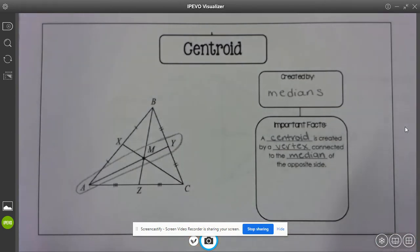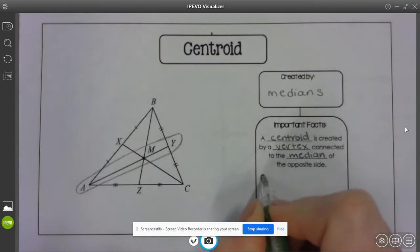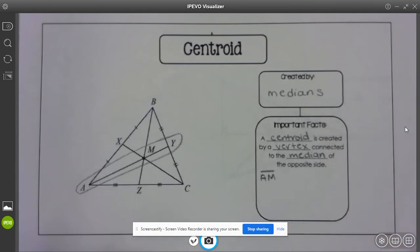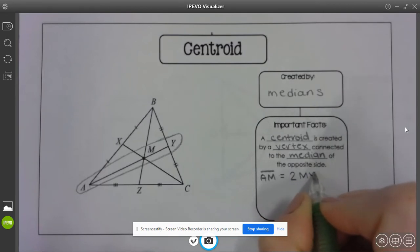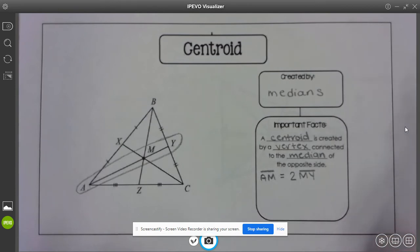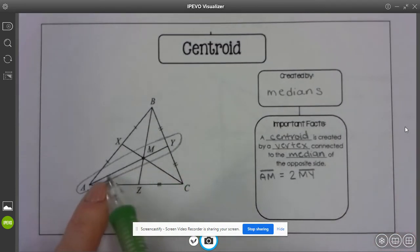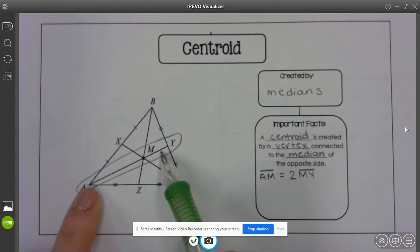So I'm going to start first. The line segment AM is actually two of the line segments of MY. Okay, so one of these is made up by two of these. So technically, there's three of these segments that are congruent to MY, because I could put another one here.